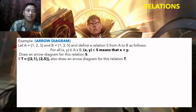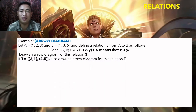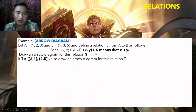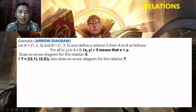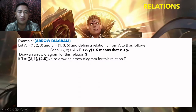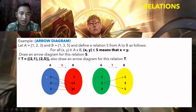Next example: let A = {1, 2, 3} and B = {1, 3, 5}. Define a relation S from A to B where (x, y) is in S means x less than y. So x must be less than y to be in S. For x = 1: 1 is less than 3 and 5, so pairs (1,3) and (1,5) are in S. (1,1) is not included since 1 is not less than 1.